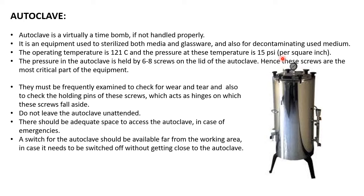In some autoclaves without a digital display, you have to monitor the pressure manually. The pressure in the autoclave is held by six to eight screws on the lid at the top, which must be closed tightly. These screws are the most critical part and must be frequently examined for wear and tear. Below the screws are holding pins that act as hinges when the screws are loosened to open the lid.